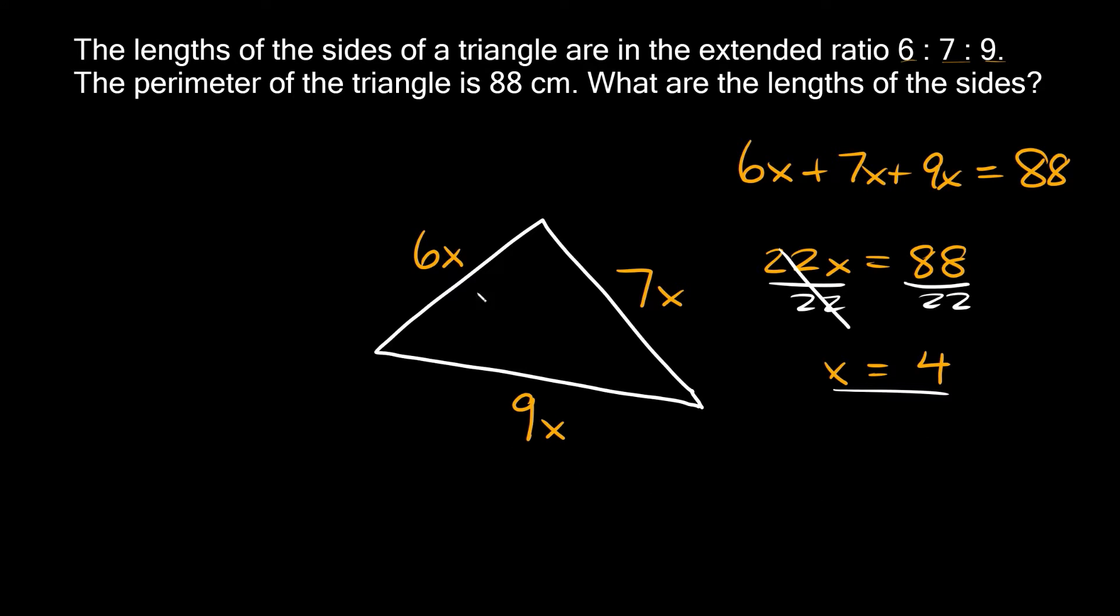So let's plug it in. First of all, 6 times 4 equals 24. This side over here would be 7 times 4, which equals 28. And the bottom side, 9 times 4 equals 36. And let's not forget our units. So here it tells us we're working in centimeters. So this side is 24 centimeters, this one's 28 centimeters, and this one's 36 centimeters.